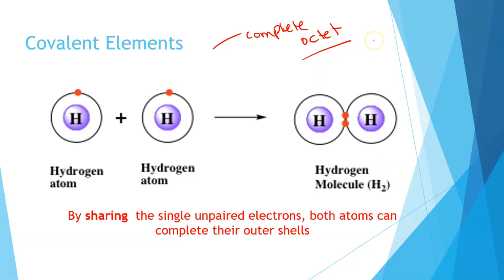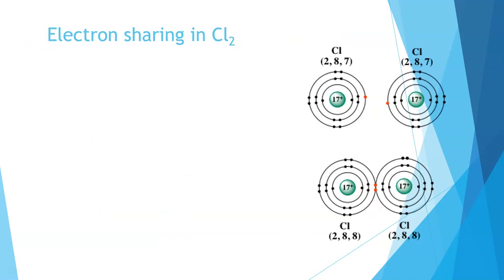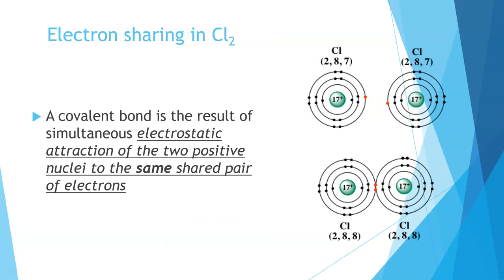This is the same for all diatomic molecules, such as chlorine, bromine, iodine, any of the halogens. They require only one more electron in their outer shell, so they form stable diatomic molecules. And we can see this here with this diagram. The electrostatic attraction between the nuclei and the shared pair of electrons is equal, so we get this bond forming.